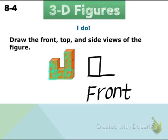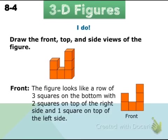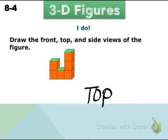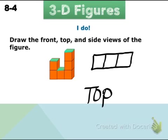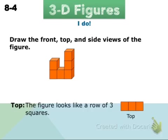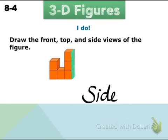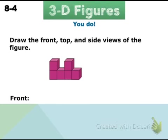From the front we've got two layers here and three levels over here. So the front view has three squares on the bottom, two on top of the right side, and one square on top of the left side. Looking from the top straight down, although there are different levels and depths, the top just has three squares straight across — a row of three squares. And finally, looking from the side view, you're just going to have three blocks stacked on top of each other.